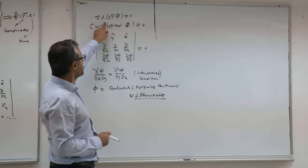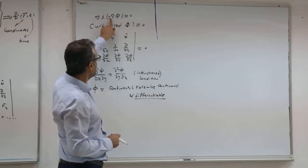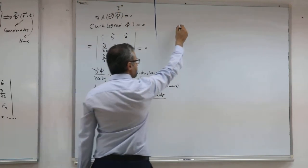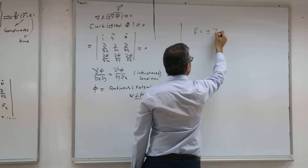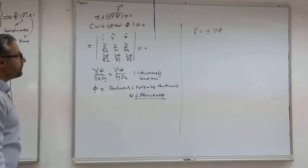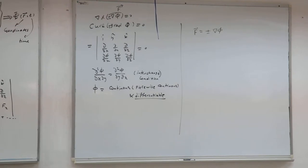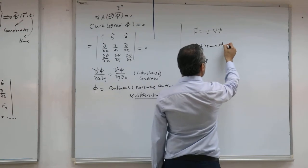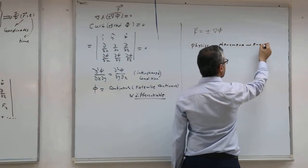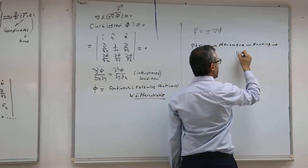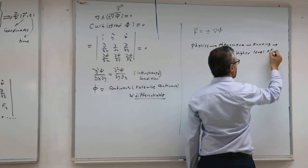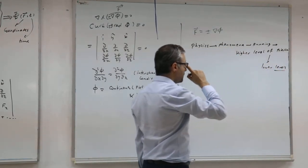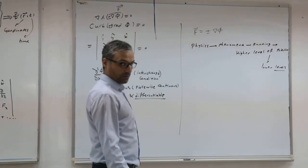Remember that if you look at these equations, the curl of the gradient is zero, but the curl of minus gradient is also zero. So you have two solutions, two possibilities for your vector field F. F will be plus or minus the gradient of the function. That is up to you to choose the plus or minus. Normally in physics, we are interested in phenomena which run from higher levels of potential to lower levels of potential.